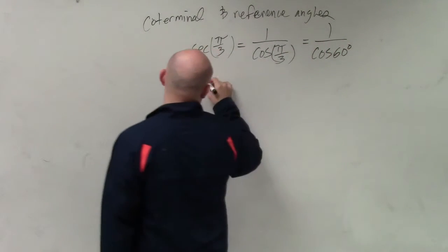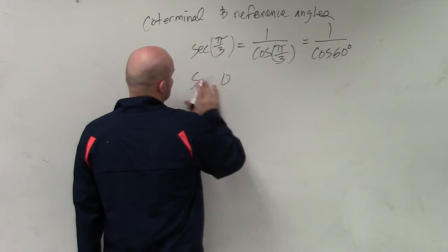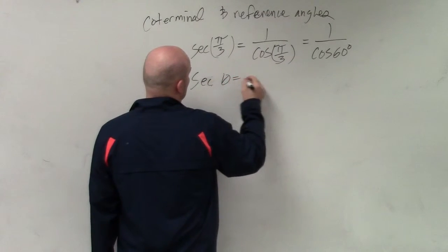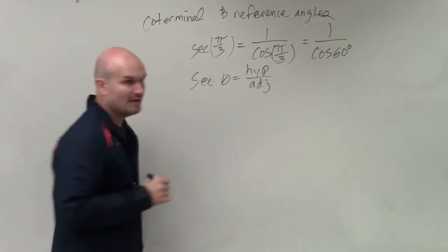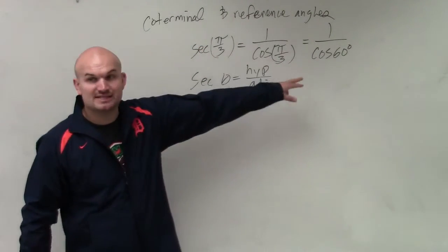We also recognize that the secant of any angle is the hypotenuse over the adjacent. Right? Now, if we're talking about something that's 60 degrees,